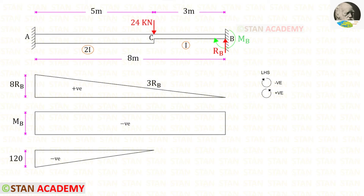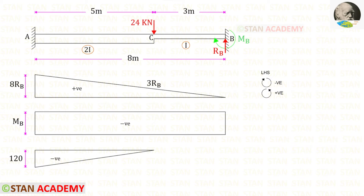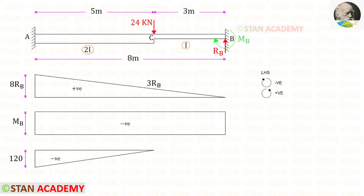Now let us take the moment Mb. We assume it is acting in the clockwise direction, so it will be negative, and the diagram will be in the shape of a rectangle. Now let us take the point load of 24 kN. It is acting in the clockwise direction, so it will be negative, and the distance is 5. 24 into 5 gives us 120, and the diagram will be in the shape of a triangle.